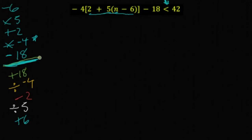That's the plan. And then, opposite steps in the opposite order. So plus 18 gets rid of a minus 18. 42 plus 18 is 60.